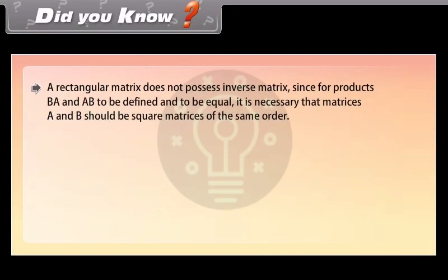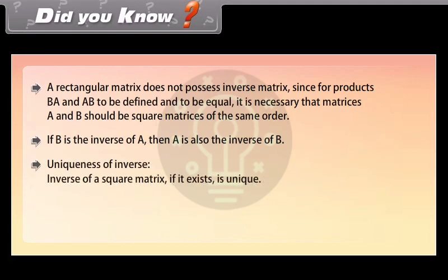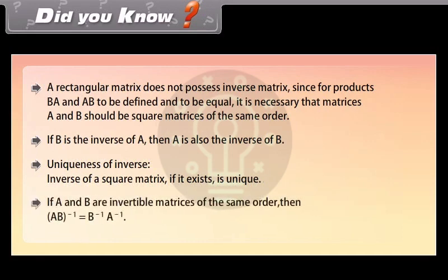Did you know? A rectangular matrix does not possess an inverse matrix, since for products BA and AB to be defined and equal, it is necessary that matrices A and B be square matrices of the same order. If B is the inverse of A, then A is also the inverse of B. The inverse of a square matrix, if it exists, is unique. If A and B are invertible matrices of the same order, then the inverse of AB is equal to the inverse of B times the inverse of A.